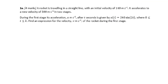Let's go to practice 1. A rocket is traveling in a straight line with an initial velocity of 140 m per second. It accelerates to a new velocity of 500 m per second in two stages. During the first stage, its acceleration after t seconds is given by this function. When t is between 0 and k, find an expression for the velocity of the rocket during the first stage.